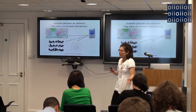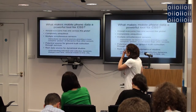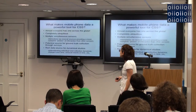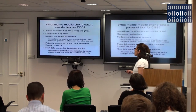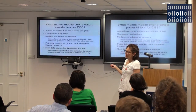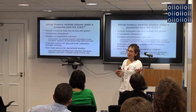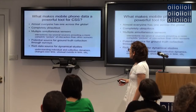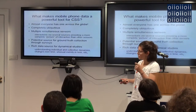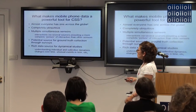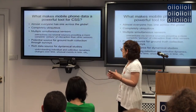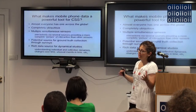That's actually when I started doing this research. I personally believe mobile phones are a really powerful tool for research in computational social science. Because almost everyone across the globe has one — it's completely ubiquitous. There are multiple sensors that simultaneously sense your activity, and a mobile phone is a good potential source for ground truth data collection through surveys and for dynamical studies — understanding individual and collective dynamics and changes over time.